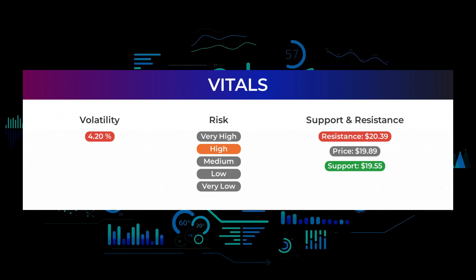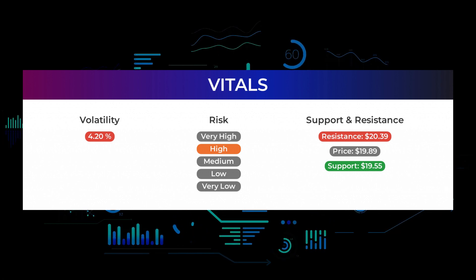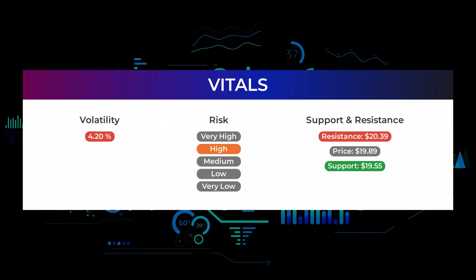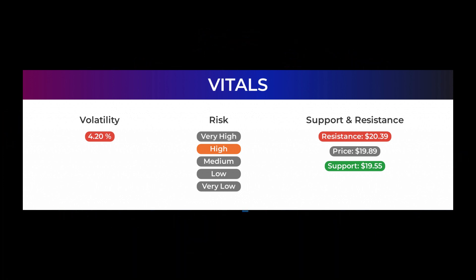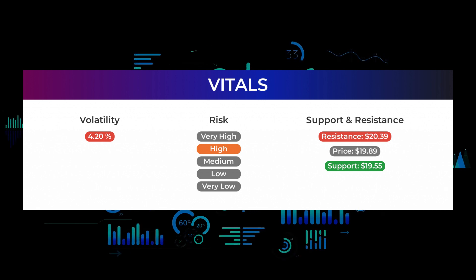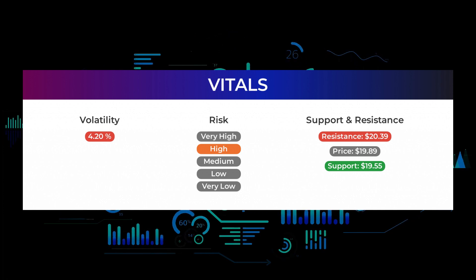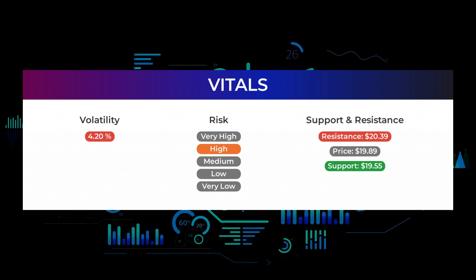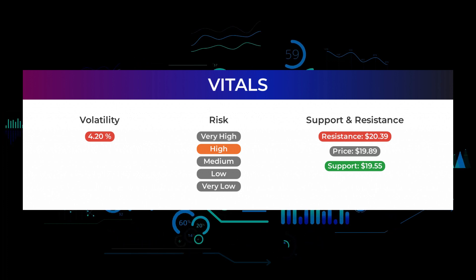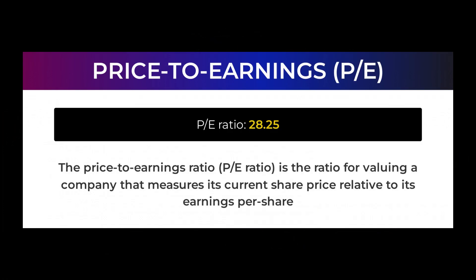Ford Motor finds support from accumulated volume at $19.55, and this level may hold a buying opportunity as an upward reaction can be expected when the support is tested. This stock may move significantly during the day due to volatility, and with a large prediction interval from the Bollinger Band, it is considered high risk. During the last day the stock moved $0.75 between high and low, or 3.77%. For the last week the stock has had a daily average volatility of 4.2%. The stock has a beta of 1.25, meaning Ford Motor is 0.25 times more volatile than the market.